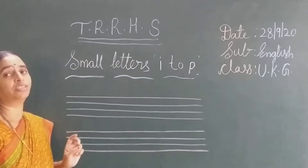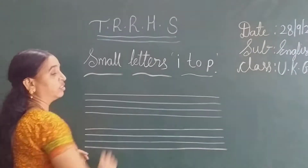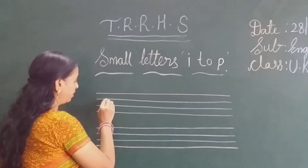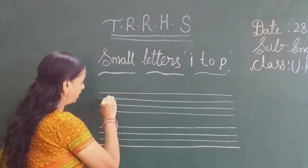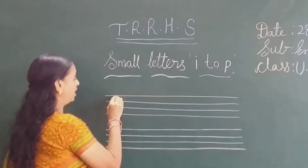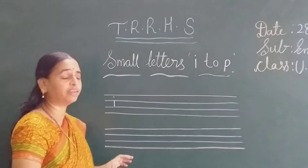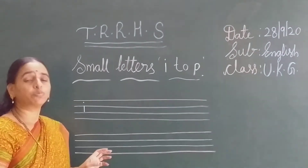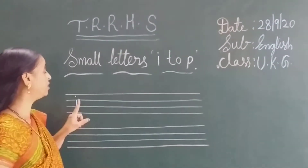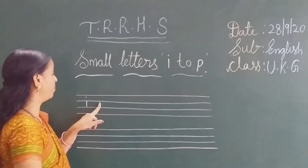Ok children, look at the board. What is the letter we have to write now? I. Small I, written in the middle two lines. Which letter is this? Small I. Then after that we have to give the finger gap there. I.